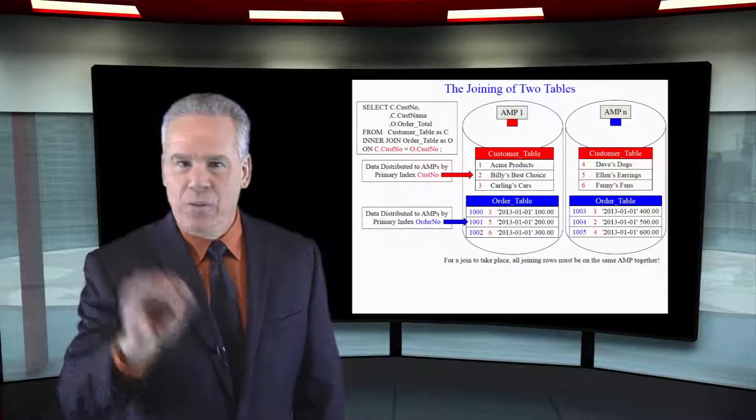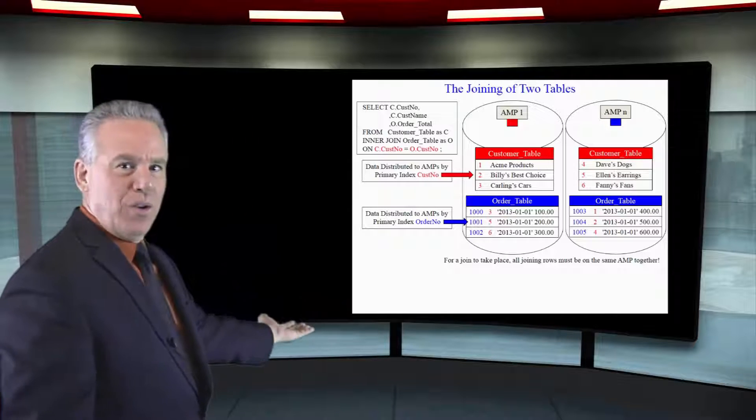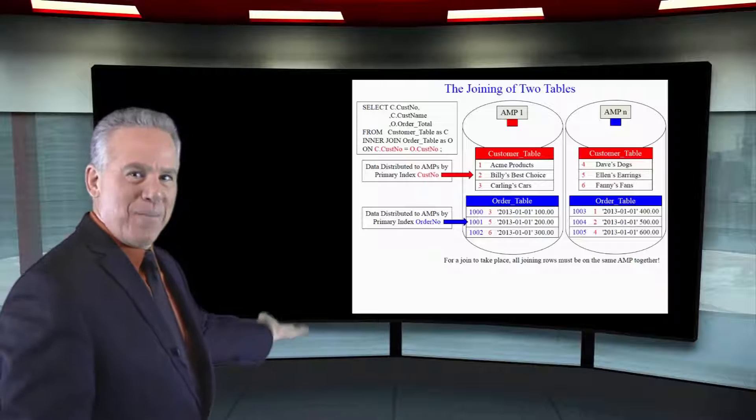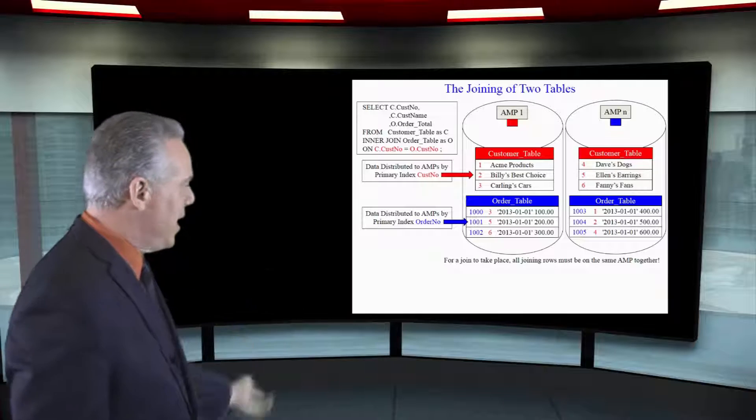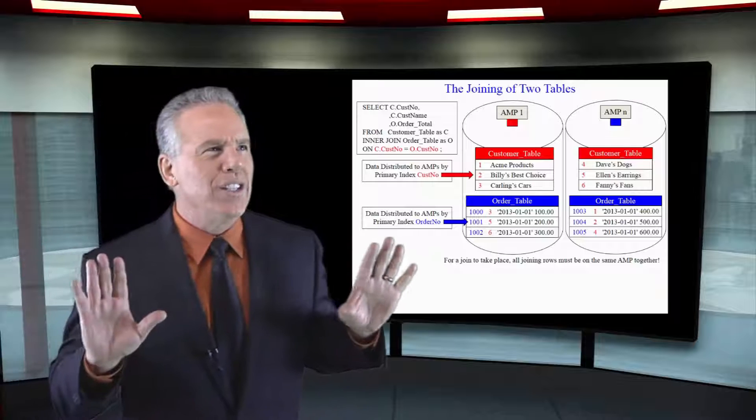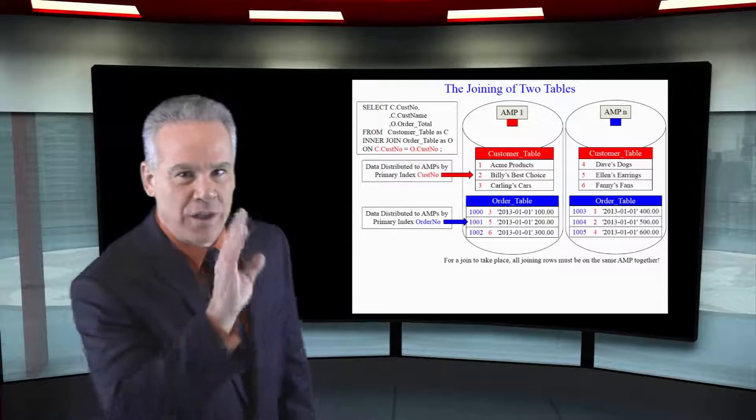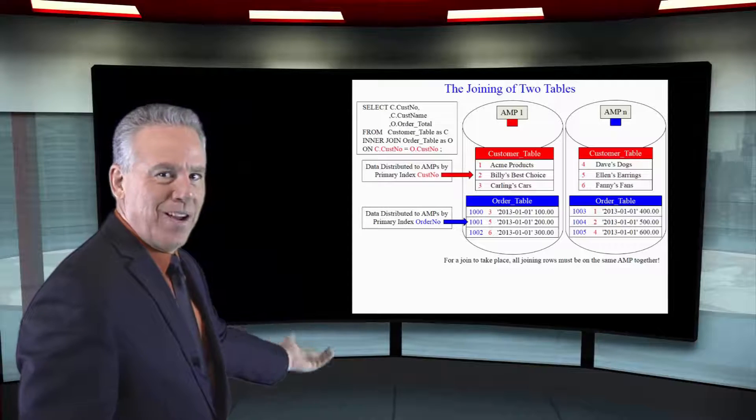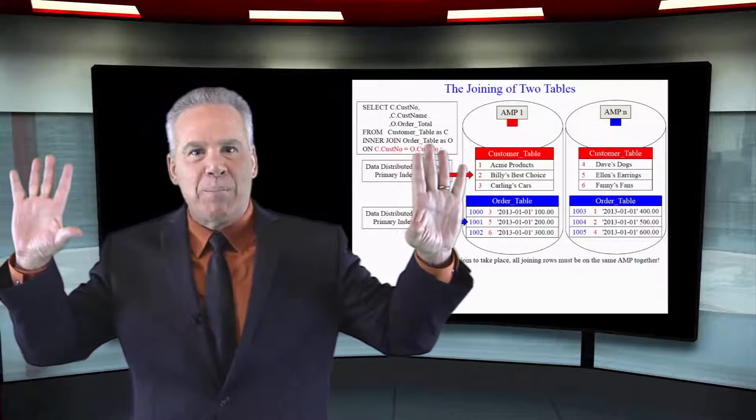So what they're going to have to do is redistribute this order table, not by the blue of order number. That was the original primary index. They'll redistribute it almost as if they're reloading it with a trick primary index of customer number. And then everything will match up perfectly.